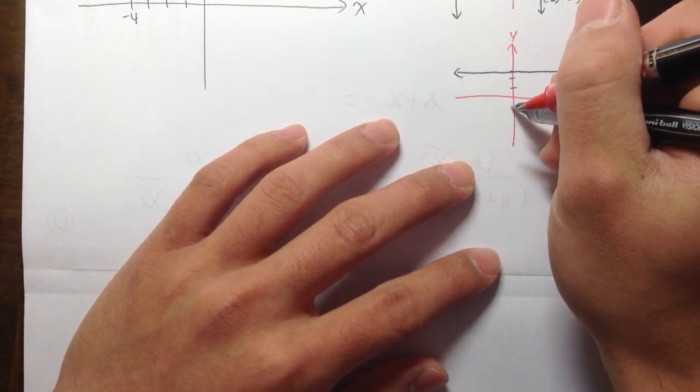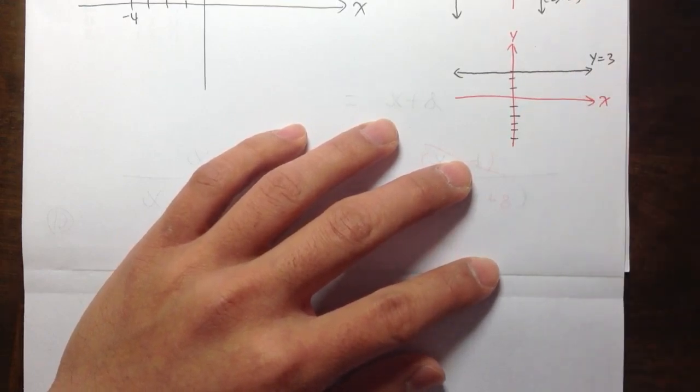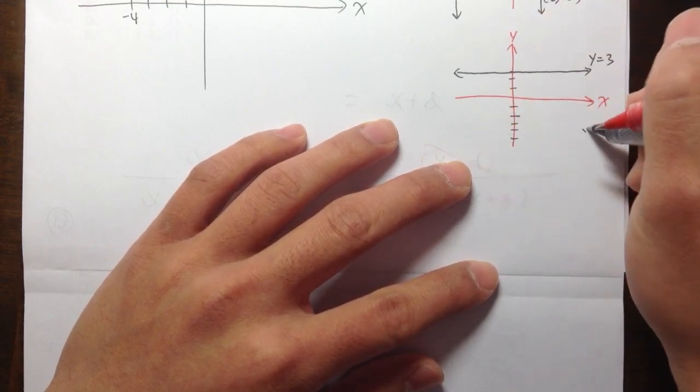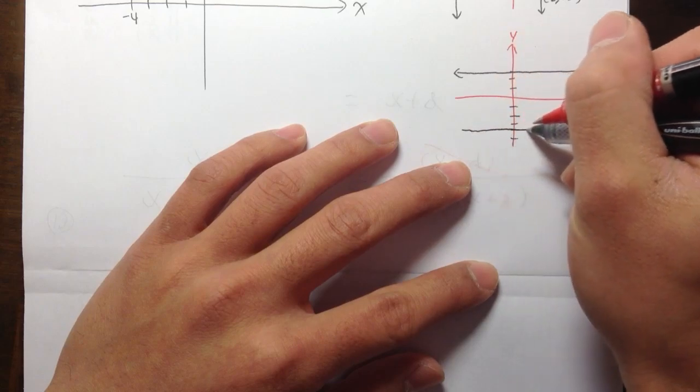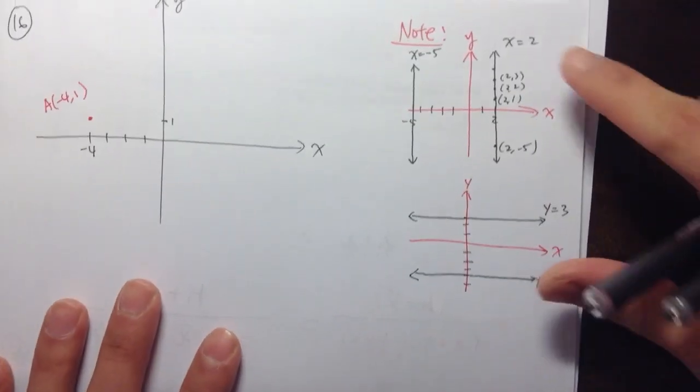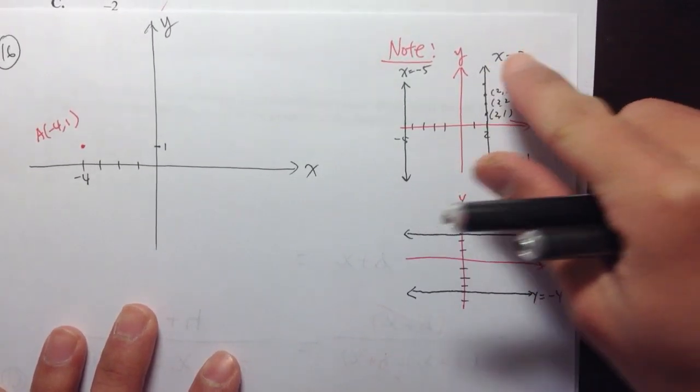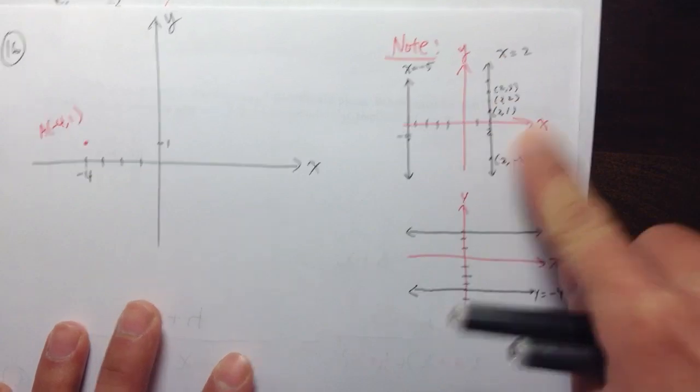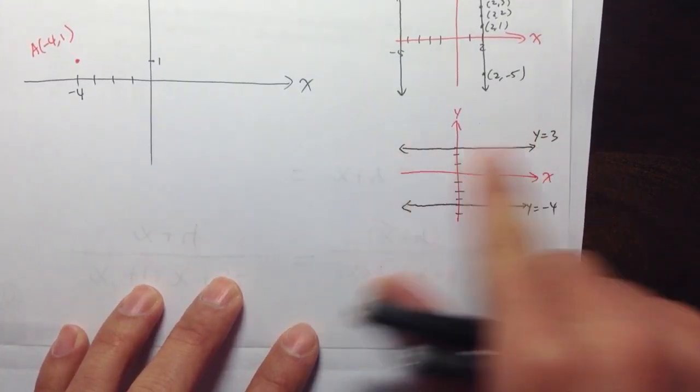So if I have, let's say, 1, 2, 3, 4, 5, I want to graph y equals negative 4. y equal to negative 4, I will go down 1, 2, 3, 4, and then it's a horizontal line, just like that. So that's the difference: when you have an equation x equal to 2, it's a vertical line. When you have y equal to some number, it's a horizontal line.